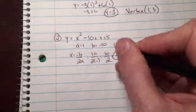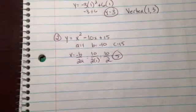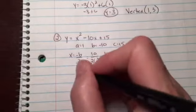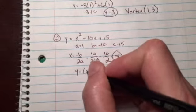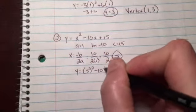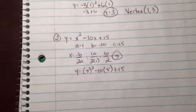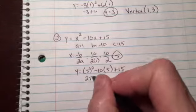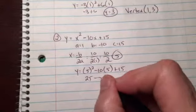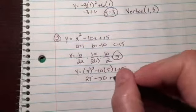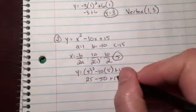That's your x value. Plug it back into the function: y = 5² - 10(5) + 15. 5² is 25, -10 times 5 is -50, plus 15.